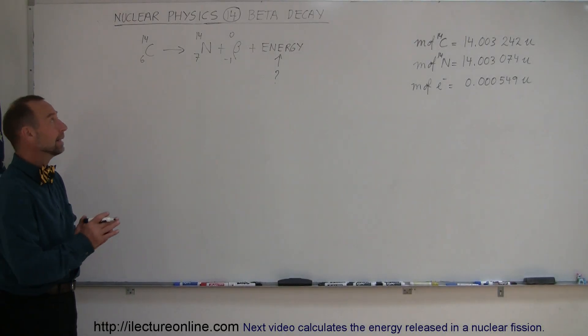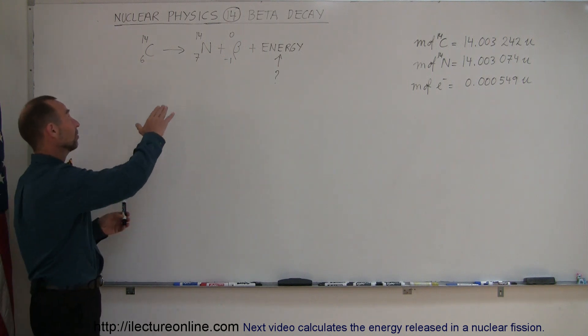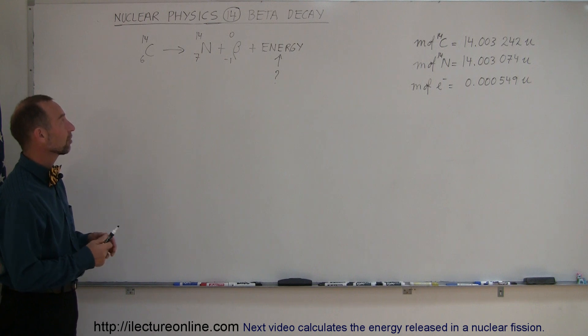Next we're going to look at beta decay and that's another nuclear reaction that happens when an isotope is unstable. The very famous carbon-14 isotope is very unstable.